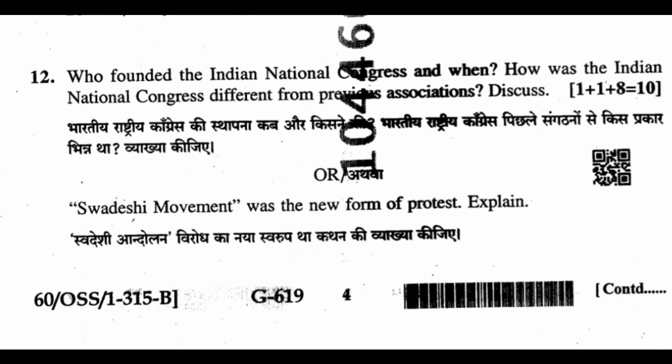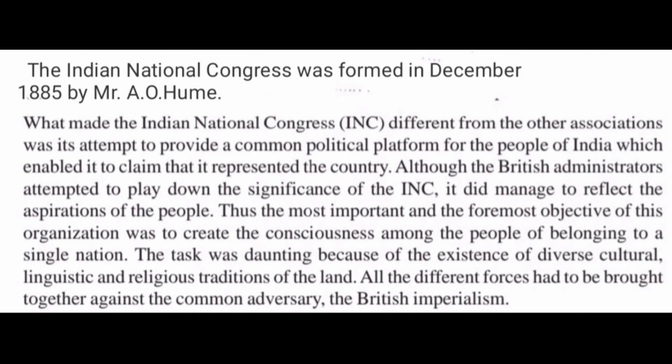Question 12: Who founded the Indian National Congress and when? How was it different from previous associations? The Indian National Congress was formed in December 1885 by A.O. Hume. What made the INC different from other associations was its attempt to provide a common political platform for the people of India, enabling it to claim that it represented the country. Although the British administration attempted to play down its significance, the INC did manage to reflect the aspirations of the people. The most important objective was to create consciousness among the people of belonging to a single nation. The task was daunting because of the existence of diverse cultural, linguistic, and religious traditions of the land, and all these different forces had to be brought together against the common adversary — British imperialism.